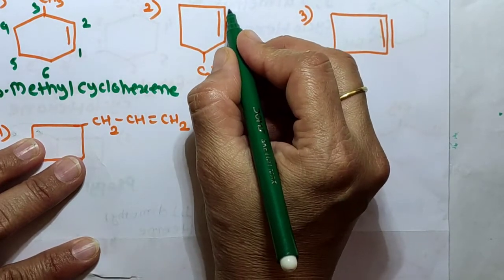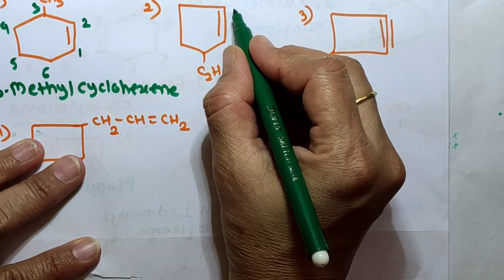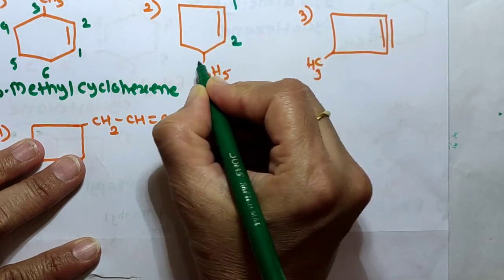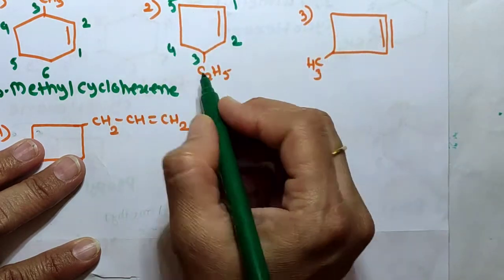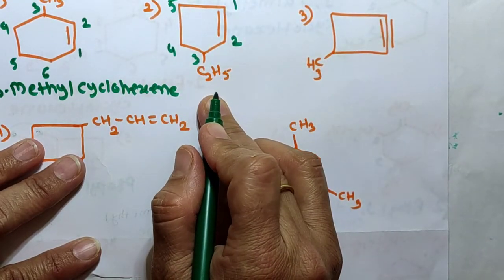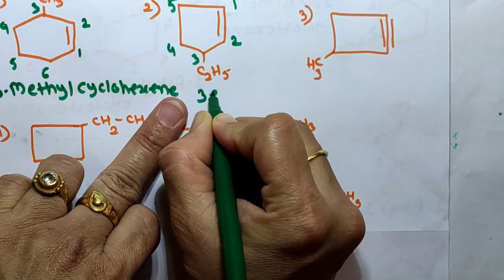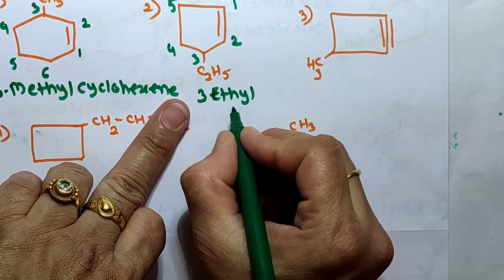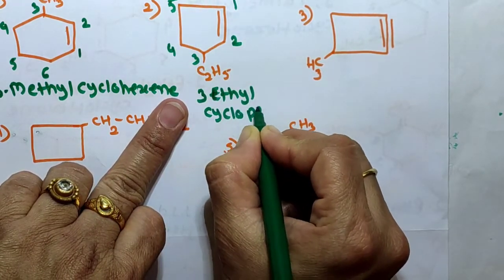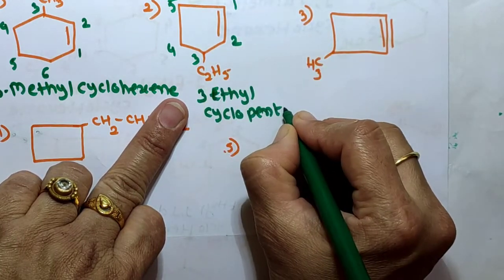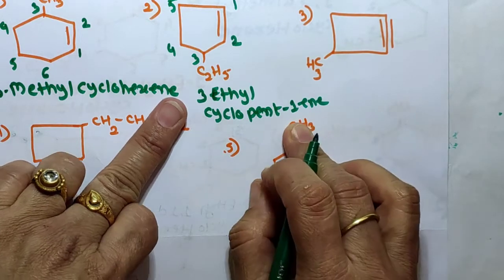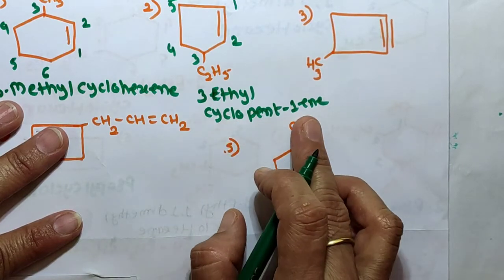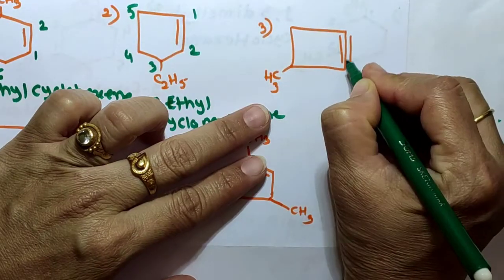Next: start numbering from the double bond in the direction that gives the substituent the lowest number: 1, 2, 3, 4, 5. An ethyl group is at position 3. The name is 3-ethylcyclopentene, which can also be written as 3-ethylcyclopent-1-ene. Next, take a compound with a triple bond present. Numbering starts from the triple bond: 1, 2, 3, 4. A methyl substituent is at position 3.